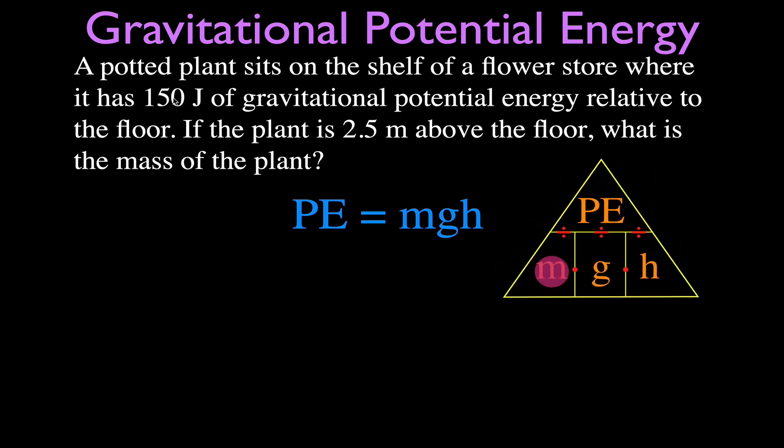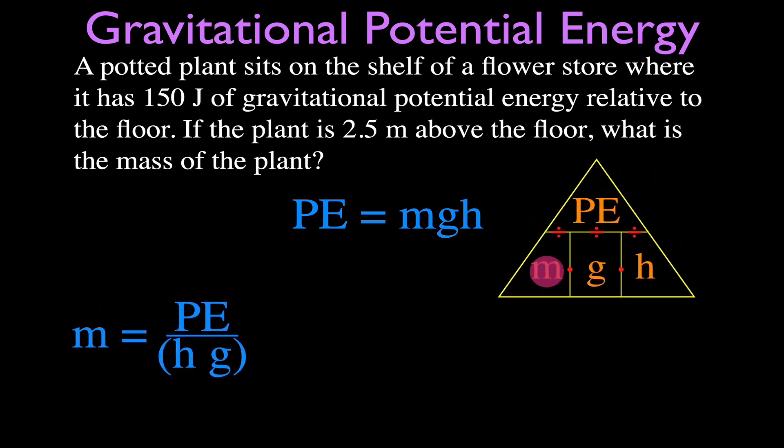Let's get out the triangle again. You can see the mass is going to be equal to PE divided by (g times h). We can just plug the values in. We have 150 joules, the height is 2.5 meters, and g is 9.81 meters per second squared. Therefore, we get that the mass of that plant must be 6.1 kilograms. That's kind of a big plant.